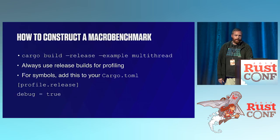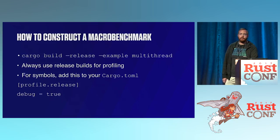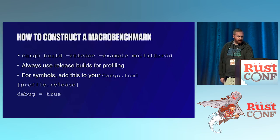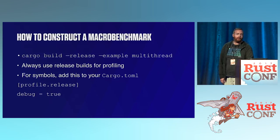When you construct a macro benchmark like the example I showed earlier, you have to remember to compile with release, because you want optimizations turned on. It's a mistake to profile code built without optimizations — you might find yourself fixing something the compiler would just fix for you. One challenge is you have to add symbols, because without them you'll just see a bunch of address spaces in your profile. A little bit of text in your Cargo.toml will give you symbols.